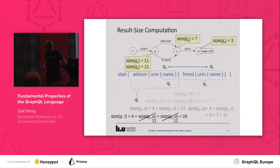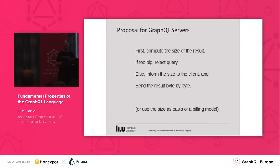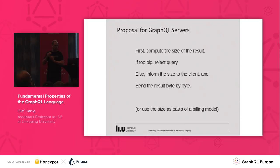So we can compute the result size in linear time, but we don't compute the result itself. Our proposal for building GraphQL servers is the following: whenever a query comes in, you first compute the size of the result efficiently using our algorithm. Once you have this, if the size is beyond some threshold, you simply reject the query. If not, you inform the client of the size, and then start executing the query and produce the result byte by byte, sending it to the client. Or as an alternative, you can also use the size as a basis for some billing model.